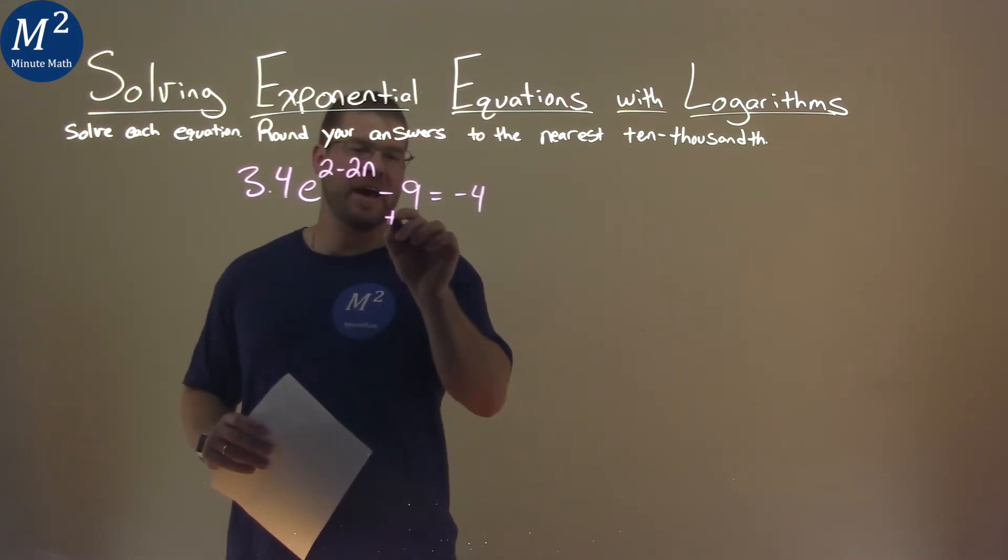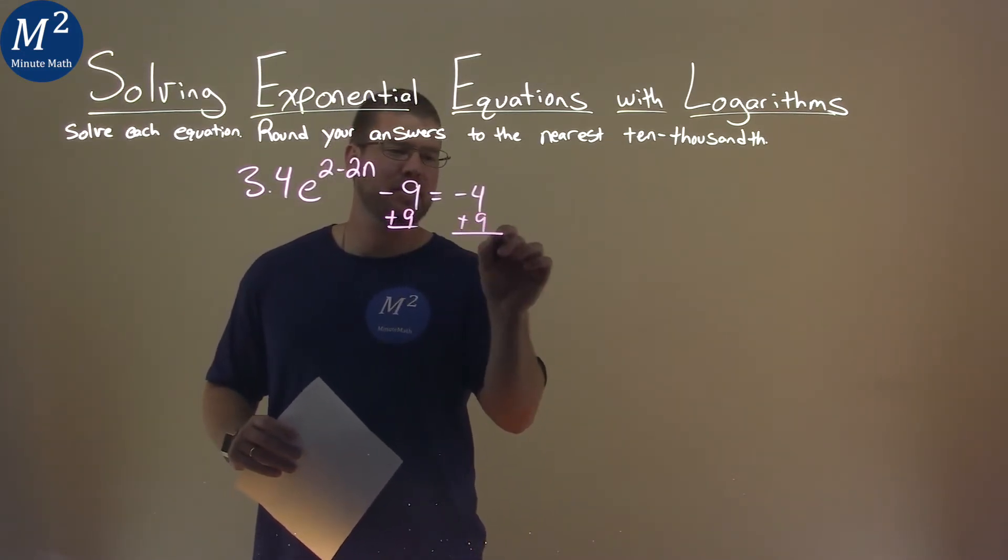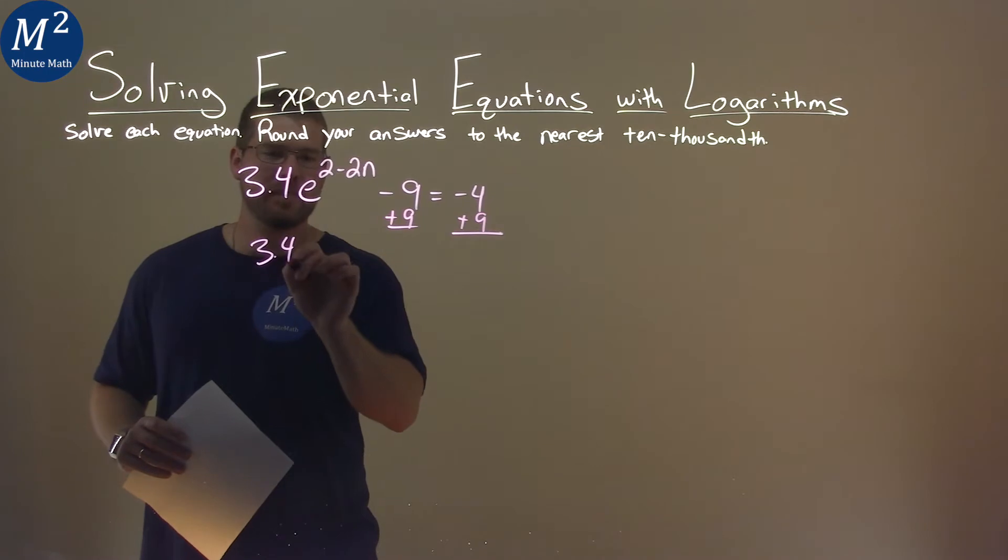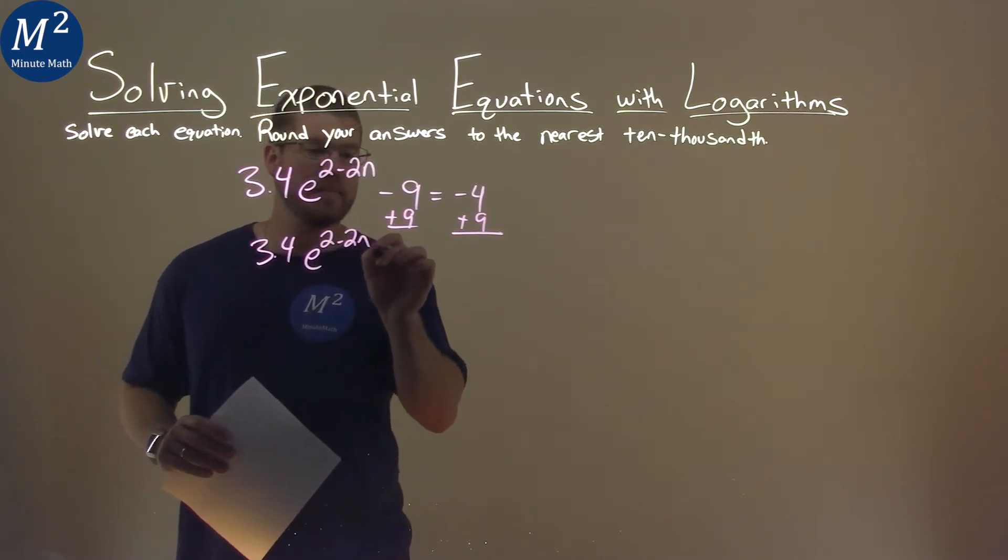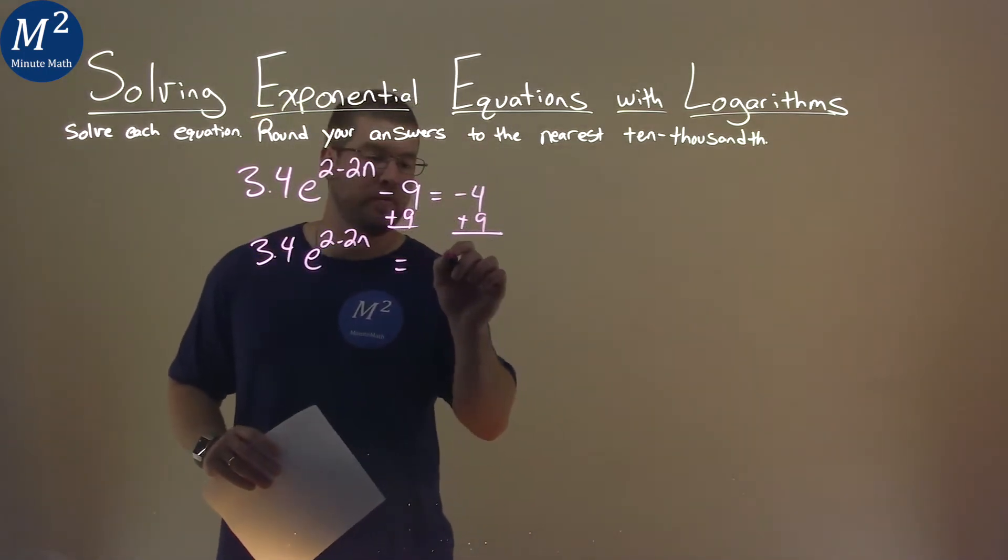Well, first thing I like to do is I'm going to add a 9 to both sides. We have 3.4 e to the 2 minus 2n, and negative 4 plus 9 is a good old 5.